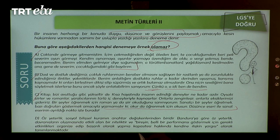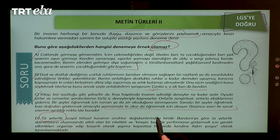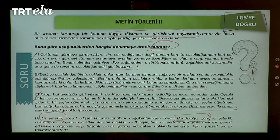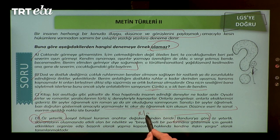D seçeneğinde 'Öz yeterlik, sosyal bilişsel kuramın anahtar değişkenlerinden biridir. Bandura'ya göre öz yeterlik davranışların oluşmasında etkili olan bir niteliktir.' Öz yeterlik hakkında bilgi verilmiş ve düşüncesini ispatlamak için Bandura'nın görüşlerine yer verilmiş — bu makale türüdür. Dolayısıyla denemeye örnek olamaz. Doğru cevap D seçeneğidir.